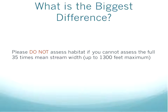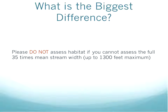The biggest difference: if you cannot assess the full 35 times the mean stream width — whether for safety reasons, landowner permission, or distance — then please don't collect habitat assessment data at all. The reason is we really want biologists and volunteers doing the method in exactly the same way. If we modified it to a shorter length like our old method, it wouldn't match how biologists do it, and some information could be missed. So if you can't go the full 35 times the mean stream width, do not worry — just don't assess habitat.